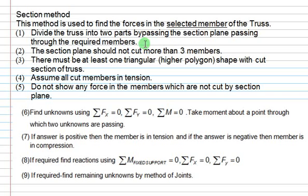Suppose you require two members, so your section plane must pass through those two members. Care has to be taken that the section plane should not cut more than three members. Because if it cuts more than three members, then the number of unknowns will be more than three, whereas the governing equations are only three: sigma Fx = 0, sigma Fy = 0, and moment = 0.